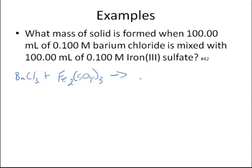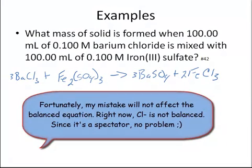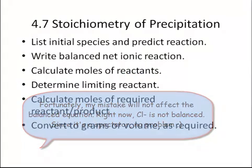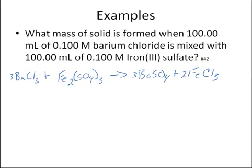It's a double replacement reaction, so we're going to make barium sulfate, BaSO4, and iron(III) chloride would be FeCl3. Then we want to balance it, so 3BaCl2, Fe2(SO4)3 yields 3BaSO4 and 2FeCl3. Now it's balanced. If you look at the steps, we write a net ionic equation.